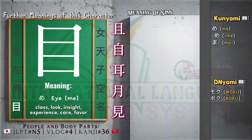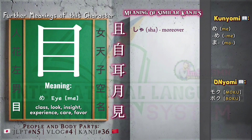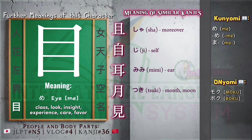Meaning of similar kanjis: Sha — moreover. Ji — self. Mimi — ear. Tsuki — month, moon. Ken — sea.